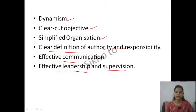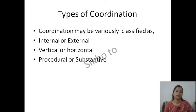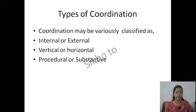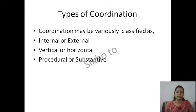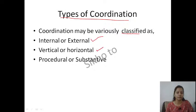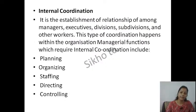Now we are coming to today's topic - types of coordination। Coordination को बहुत अलग-अलग types में classify किया गया है। Mainly there are three types: internal and external coordination, vertical and horizontal coordination, and procedural and substantive coordination। एक-एक करके हम लोग इन points को detail में समझने की कोशिश करते हैं।